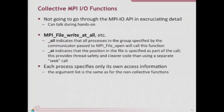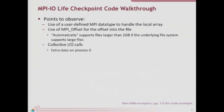You don't have to pass the same parameters into these functions — it wouldn't make sense to write the same bytes to the same places. One process might write nothing, another might write a header, another might write a collection of rows — all interacting with the same file but describing different sets of data. We're going to use a user-defined MPI data type to talk about local data and local header information, and an MPI offset to talk about where we're interacting in the file.